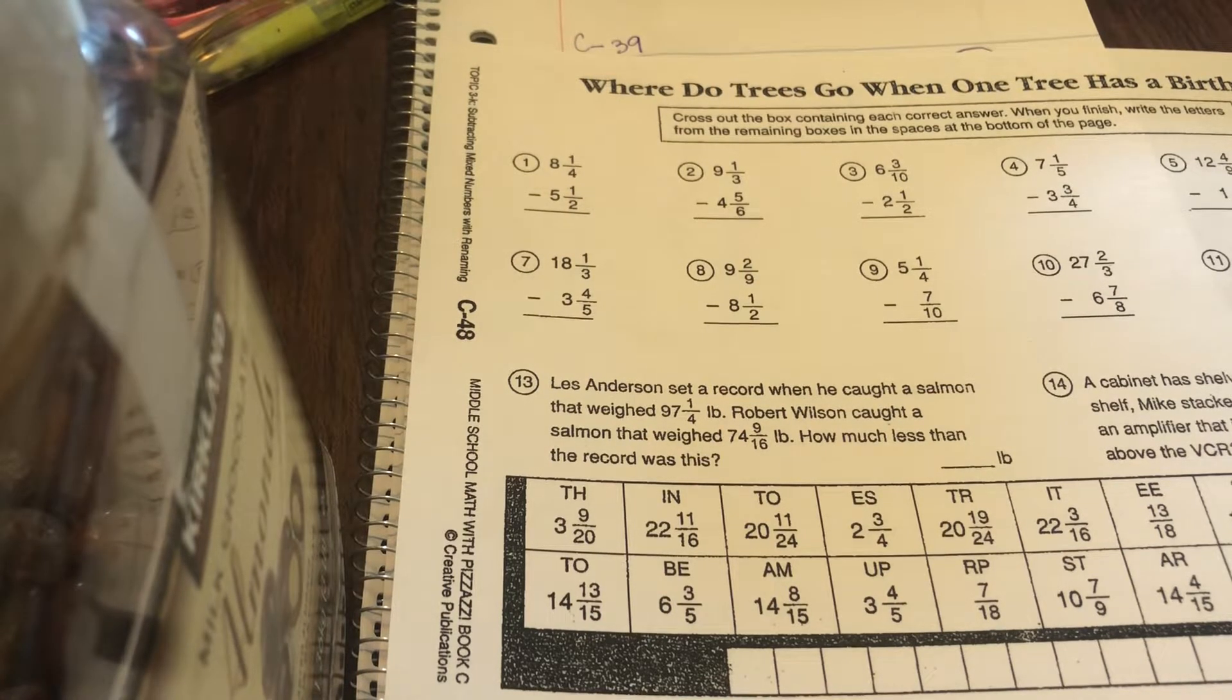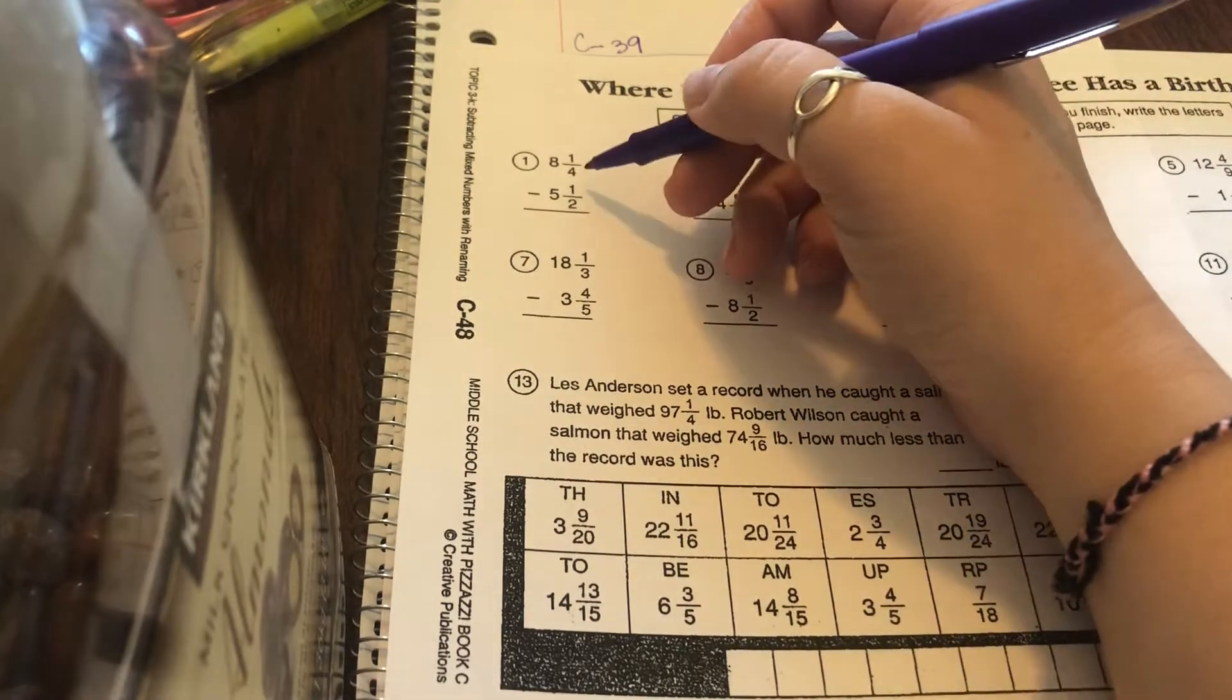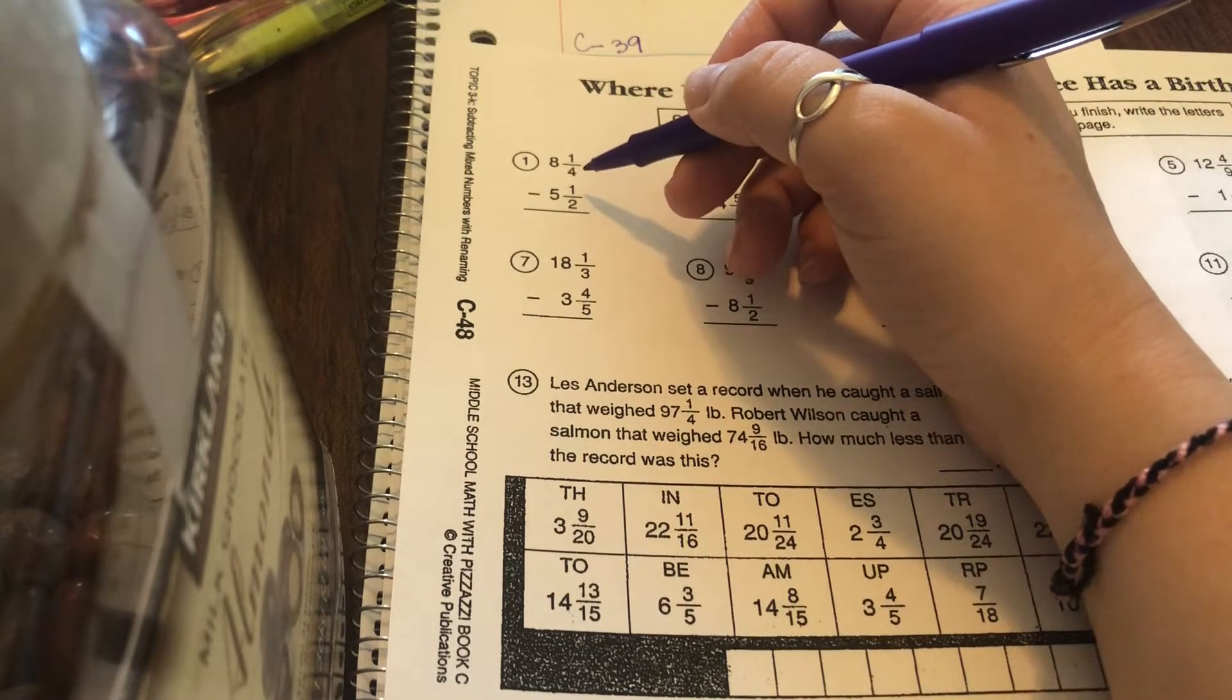When we are subtracting, the first thing you want to do is get a common denominator. So what can 2 and 4 both become? Look at the bigger number of 4. Can 2 become 4? Yes, it can.